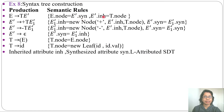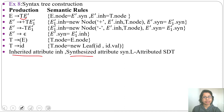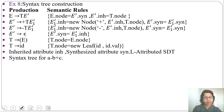Here INH stands for inherited and SYN stands for synthesized. Now identify whether the SDT is S-attributed or L-attributed. It contains both synthesized and inherited attributes, and this inherited attribute is from its left sibling. Since it is inheriting from its left sibling, it is an L-attributed SDT. For L-attributed SDT, attributes can be synthesized or inherited with the restriction that it can inherit from its parent or left sibling.